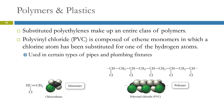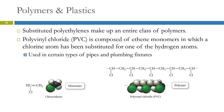Substituted polyethylenes have different substituents on the polyethylene backbone. For example, polyvinyl chloride, or PVC, has chlorines instead of some of the hydrogens. Regular polyethylene would just be CH₂-CH₂-CH₂, but in PVC every other carbon has a chlorine on it, coming from using vinyl chloride as the monomer. PVC is used in irrigation systems, plumbing fixtures, and the DI water lines here — it's just gray PVC.